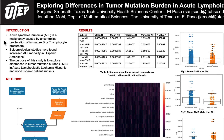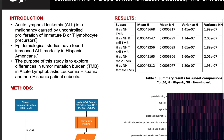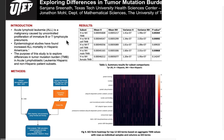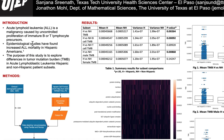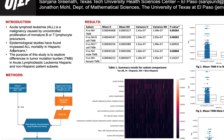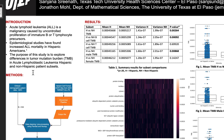For a little bit of background, acute lymphoid leukemia, or ALL, is a malignancy caused by uncontrolled proliferation of immature B or T lymphocyte precursors. Several epidemiological studies have found increased ALL mortality in Hispanic Americans. Cancer is the second leading cause of death in the United States and the first leading cause among Hispanic Americans. Not only are they diagnosed at a younger age, but they also have worse outcomes compared to their non-Hispanic counterparts.